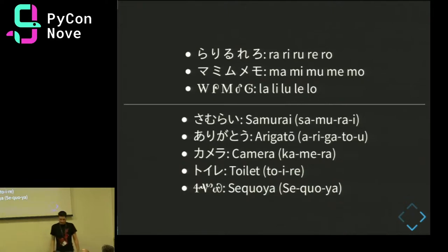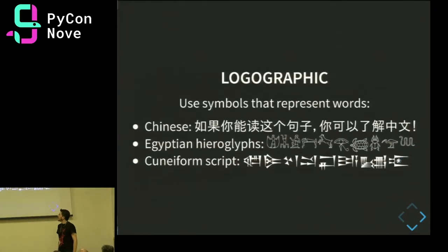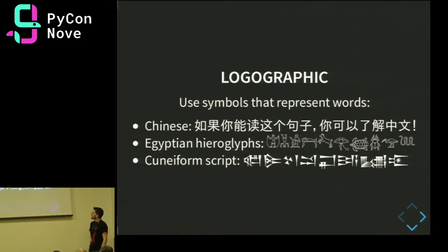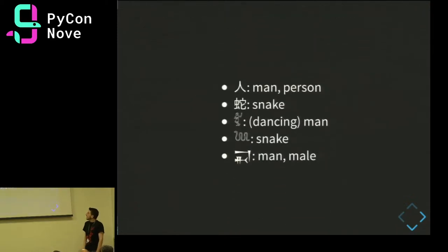Finally, we have logographic writing, which is actually very old. Egyptian hieroglyphs, cuneiform scripts, and Chinese all use symbols that represent words. Each of these symbols — like the upside-down man, the jumping goat, or the turtle in hieroglyphs — or in Chinese, all these are called logographics. Every symbol represents a whole word. For example, this character in Chinese means man or person.